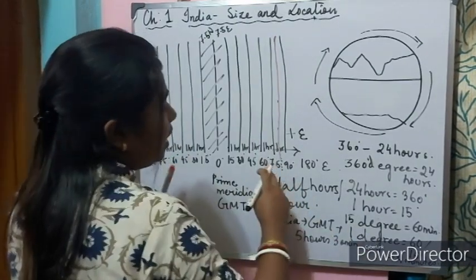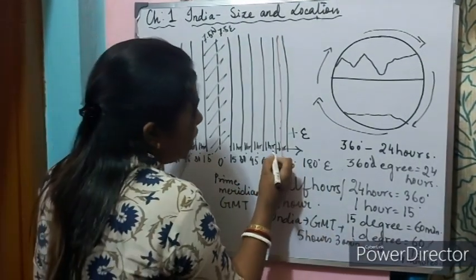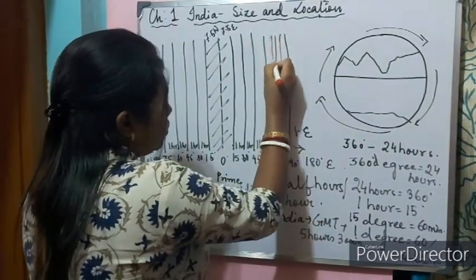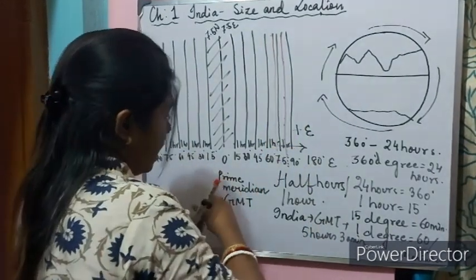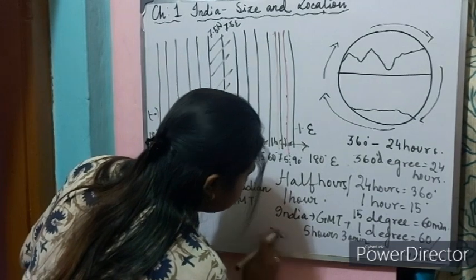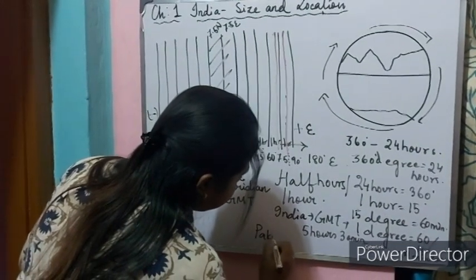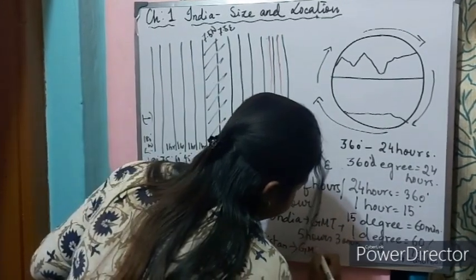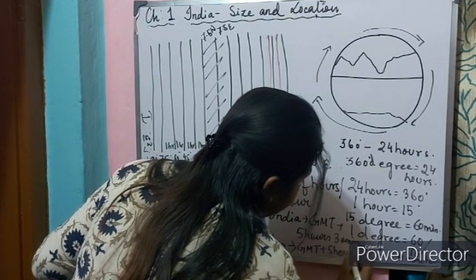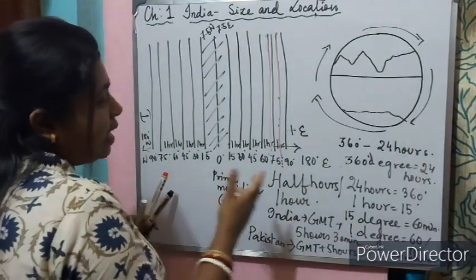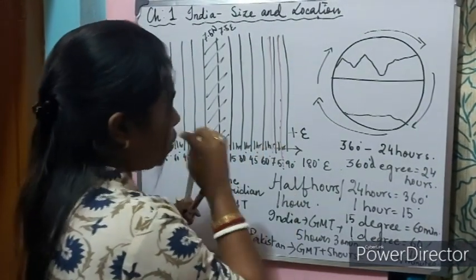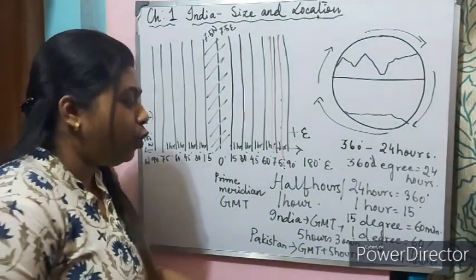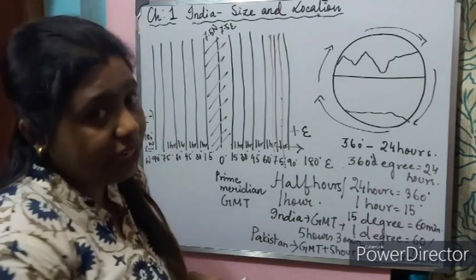Pakistan has a standard meridian of 74 degrees and is 5 hours ahead of Greenwich. So the difference between India and Pakistan is just half an hour. This is why the standard meridian must be well divisible by 7.5 degrees.